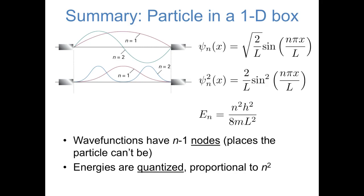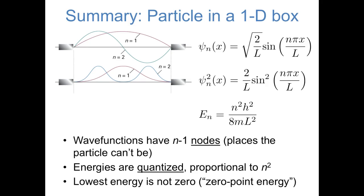Also, notice that the lowest energy — the value when you plug in n equals 1 — is not zero. So even in its lowest energy ground state, a particle-in-a-box has some kinetic energy. In quantum mechanics, this idea is called zero-point energy: energy that an object has even at absolute zero temperature.